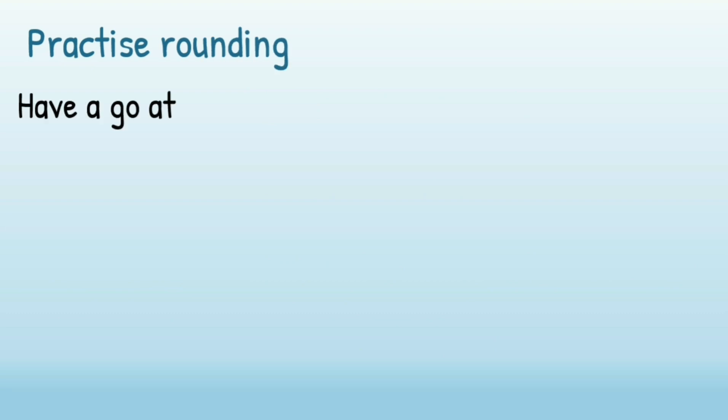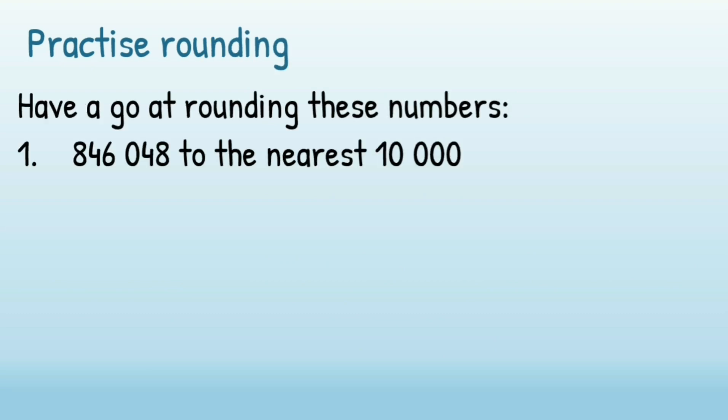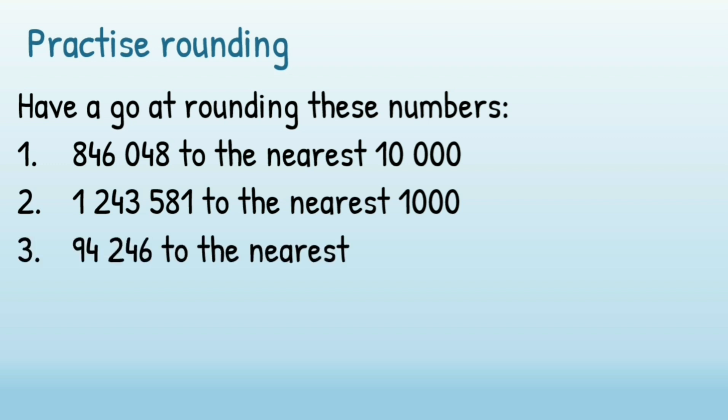Here are some practice questions for you to have a go at. You're rounding 846,048 to the nearest 10,000. The second one, you're rounding 1,243,581 to the nearest 1,000. The third one, you're rounding 94,246 to the nearest 10,000.